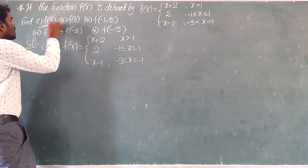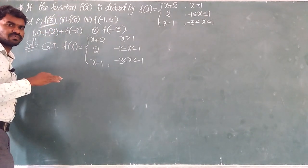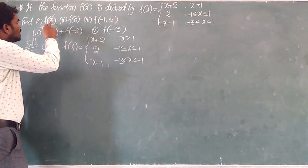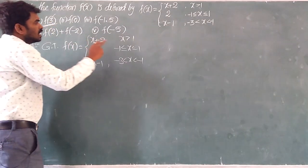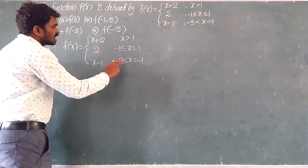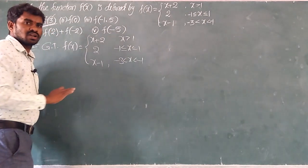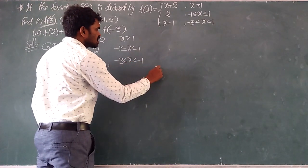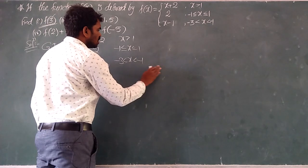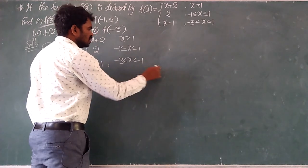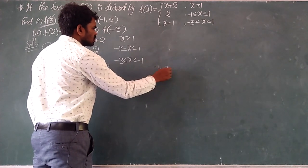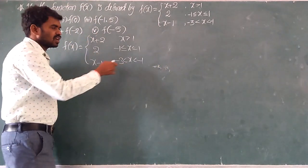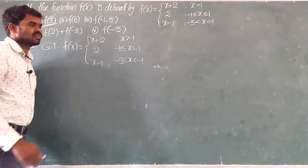Very simple. Here f of 3, we should find. So where does 3 come? Is it between minus 3 and minus 1? No, because between minus 3 and minus 1 we get values like minus 2, minus 2.5, minus 1.5. And 3 is also not between minus 1 and plus 1.